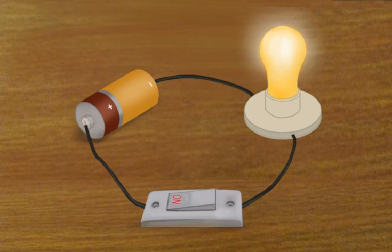Students, when the ends of a cell are joined with the connecting wire to a bulb, the bulb glows, and we say that current is flowing through the circuit.